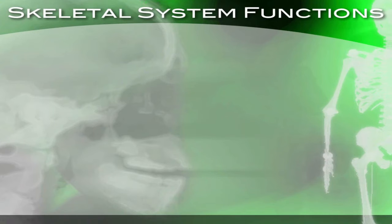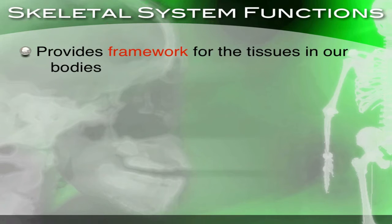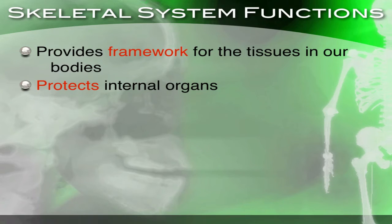Let's talk about the functions of the skeletal system. Number one, it provides a framework for the body — if we didn't have a skeletal system it would just be a blob. It provides a framework for the tissues in our body. Number two, it protects the internal organs, like your lungs and heart. We have these internal organs and we want them protected, so we have a skeletal system to help with that.